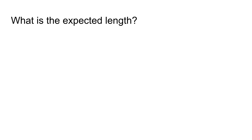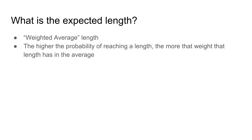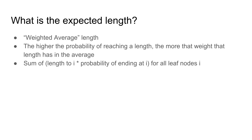Let's consider what the expected length is. You can look this up on Wikipedia for a more concrete definition, but essentially it's a weighted average length. The higher the probability of reaching a particular length, the more weight that length has in the average. So if there are 10 ways to get length 2 and only one way to get length 1, length 1 may have less weight — unless the total probability of all length-2 paths equals 0.5 and the probability of length 1 is also 0.5, in which case they have equal weight. Essentially, you output the sum of length-to-i times probability-of-ending-at-i for all leaf nodes i.